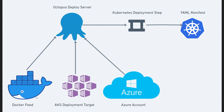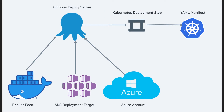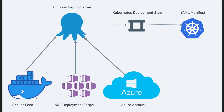So once we have all of that set up, we're gonna take a look at the Kubernetes deployment step underneath our processes and our project, so we can set up where we're gonna be deploying from. We will be deploying from that Kubernetes deployment step, and we're gonna take a look at the YAML manifest that we can use and create to deploy our NGINX Docker image to AKS. So with that, let's go ahead and jump right into the demo.